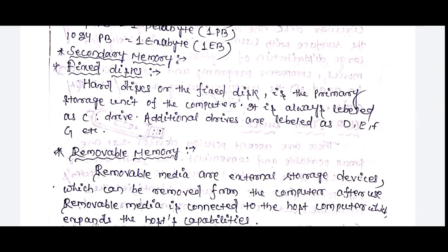Secondary memory — the hard disk is the primary storage unit of the computer. It is always labeled as C drive. Additional drives are labeled as D, E, F, G, etc.